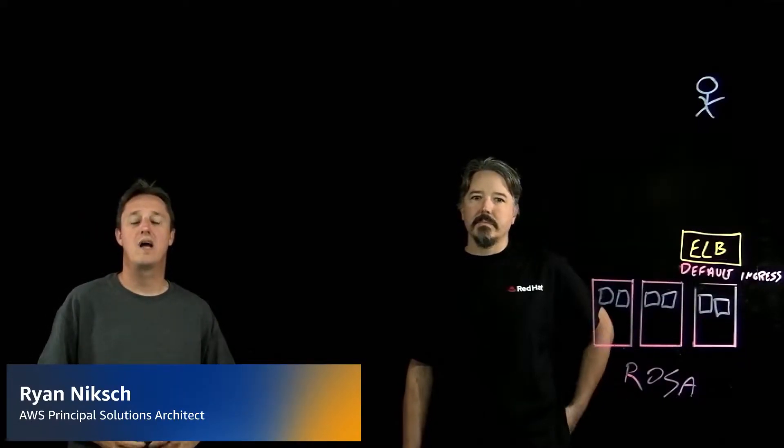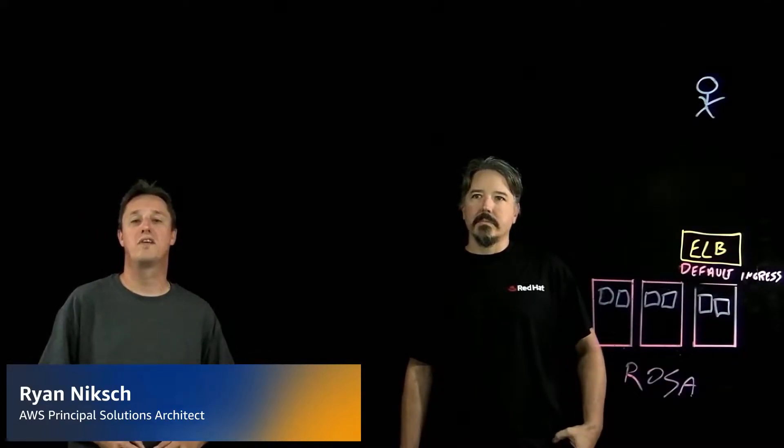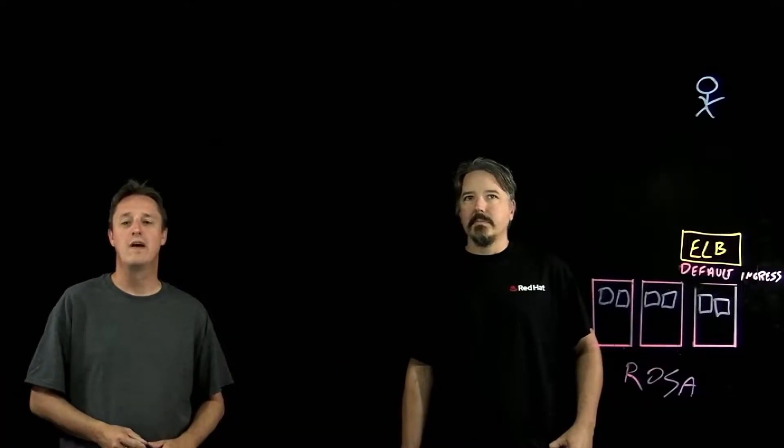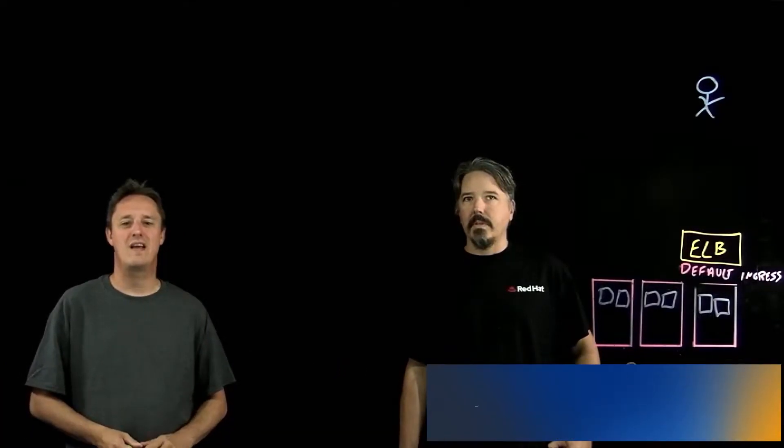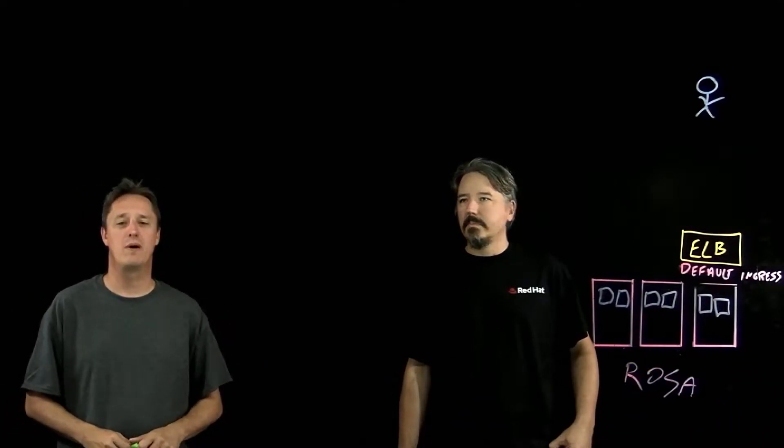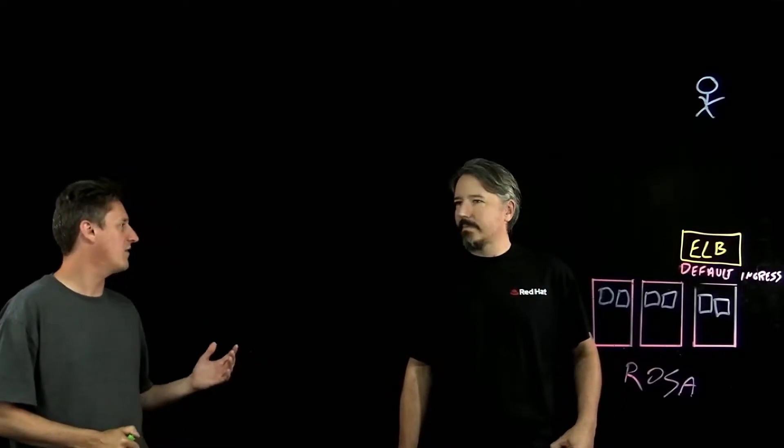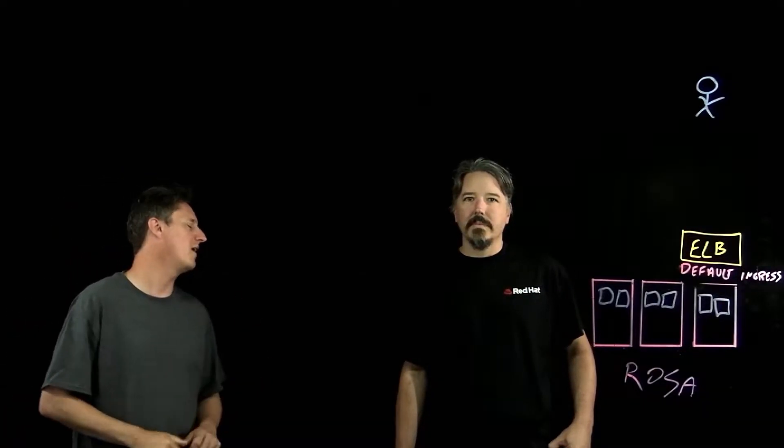Greetings, my name is Ryan Nix. I am a Principal Solutions Architect with Amazon Web Services. Joining me here today is Paul, who is from Red Hat, and he is a managed OpenShift Black Belt service member. Paul, say hi and give us a very brief description of your role at Red Hat.